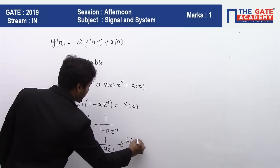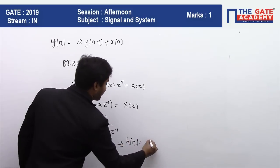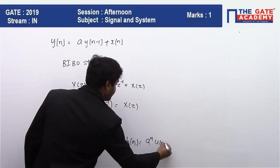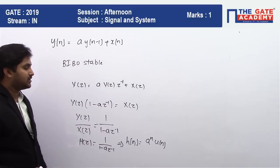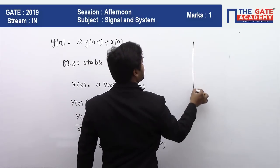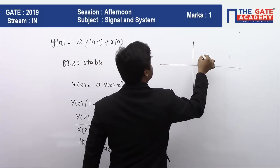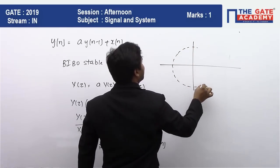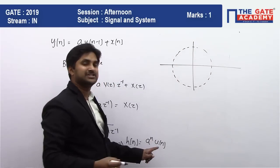This implies that the value of h(n) will be equal to a^n·u(n). We know that whenever you want to have a stable system, the ROC must enclose the unit circle.